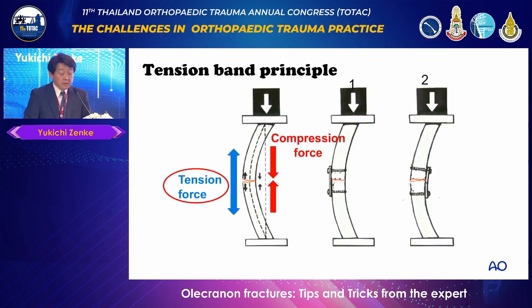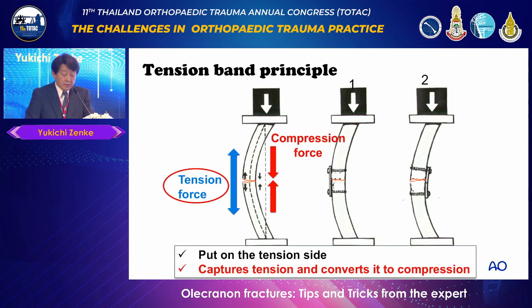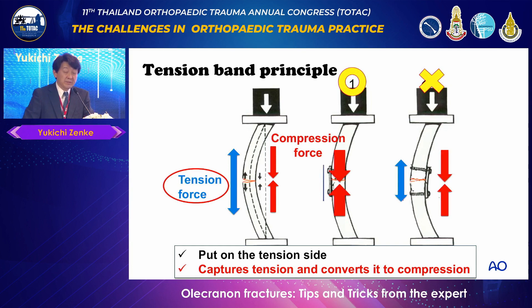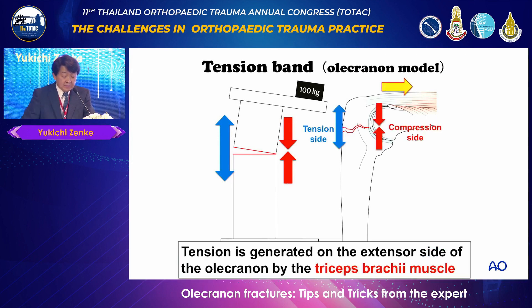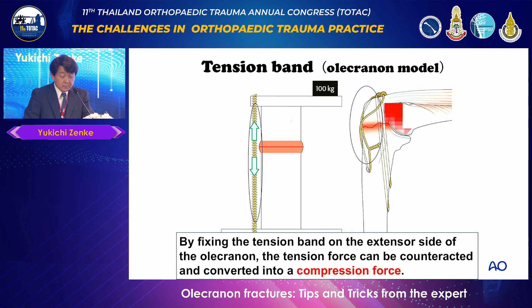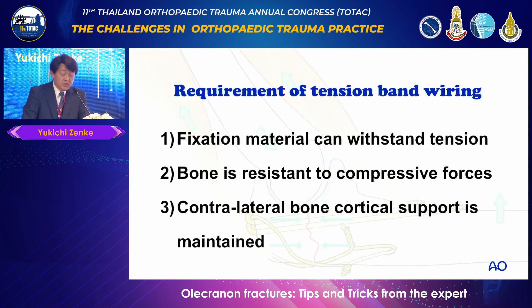Next, the biomechanical theory of tension band. The principle involves tension force and compression force: fixation material is placed on the tension side, capturing tension and converting it to compression. One loop is acceptable, but two loops is not ideal as extensor force causes widening. In the original tension band model, the triceps tendon is on the extensor side — the tension side — and K-wire with tension band wiring converts this to compression force. Requirements: fixation material must withstand tension, bone must be resistant to compressive forces, and contralateral bone cortical support must be maintained.